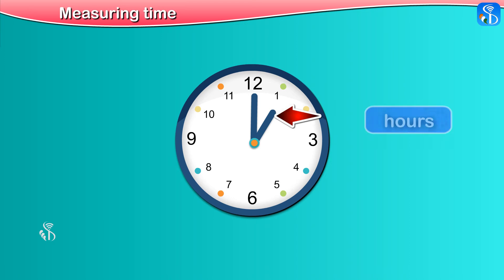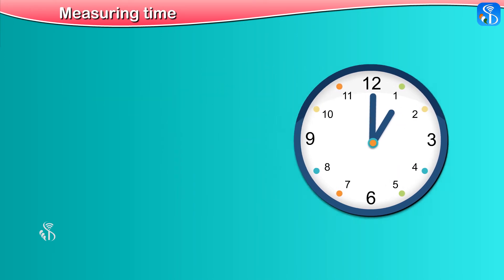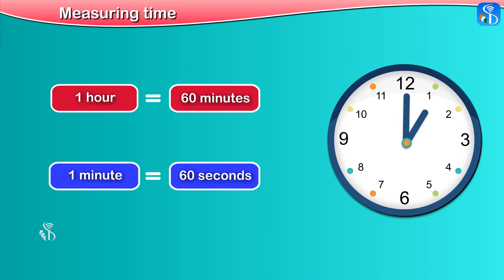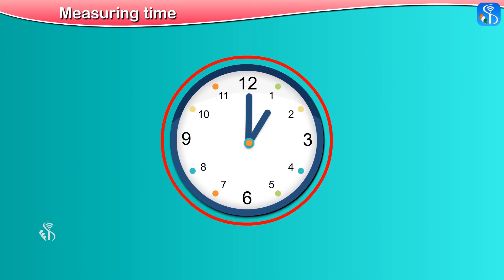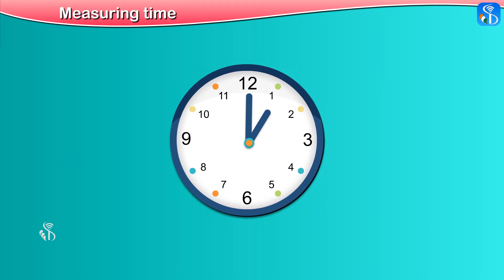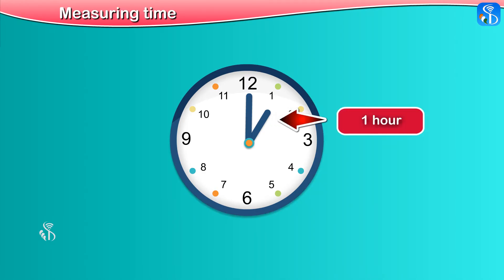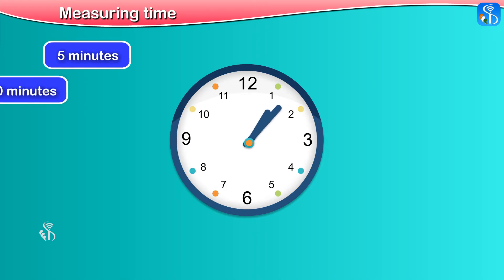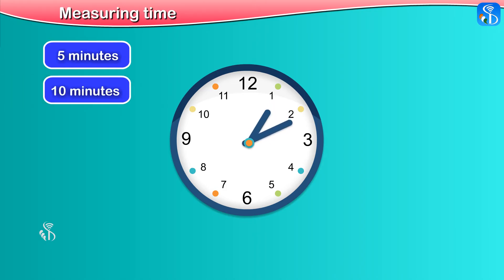The small hand shows us the hours and the big hand shows minutes. One hour is equal to 60 minutes and one minute is equal to 60 seconds. Numbers from 1 to 12 are displayed on the dial of a clock. When the hour hand is at 1, we say it is 1 o'clock. When the minute hand is at 1, it indicates 5 minutes. When the minute hand is at 2, it indicates 10 minutes.